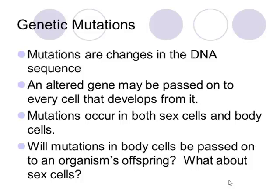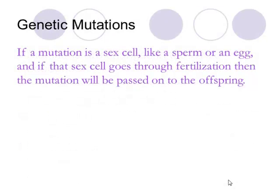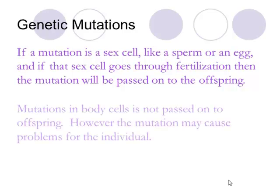Let's think about this with an example. If I've spent too much time out in the sun, that excess time in the sun impacts my skin cells. Skin cells are body cells. Will those potentially mutated cells in my skin be passed on to my daughters? The key is understanding what offspring are made up of — they are made up of sex cells. So body cell mutations are not going to be passed on. However, if the mutation is in a sex cell like a sperm or egg, and that gets fertilized and becomes an offspring, then the mutation will be passed on. Body cell mutations might cause individual issues for me, but my daughters should not be affected.